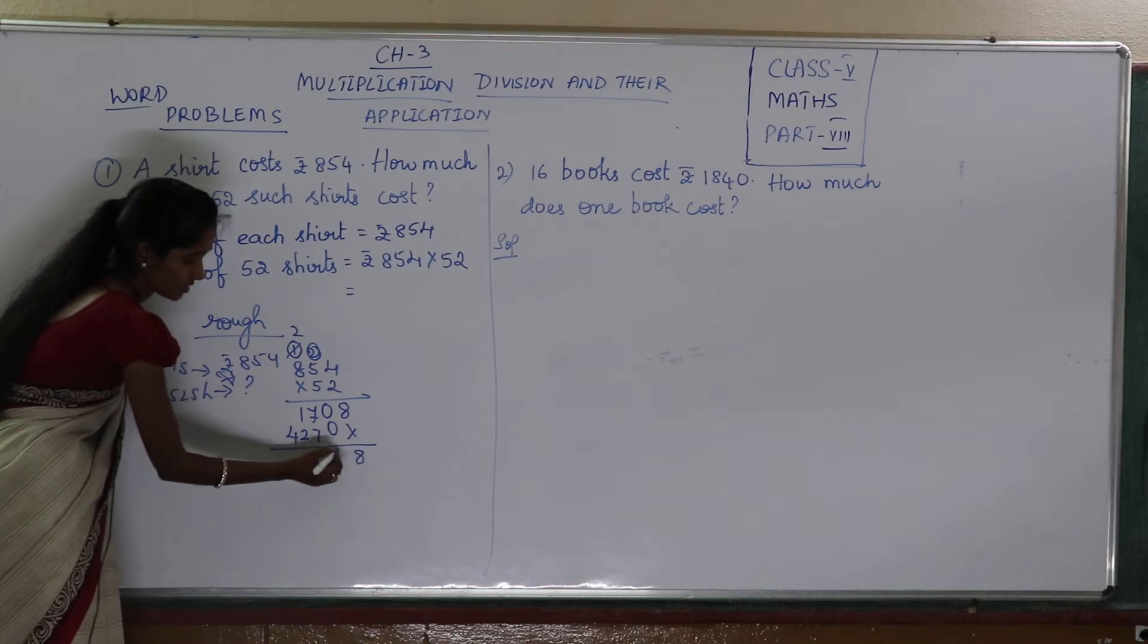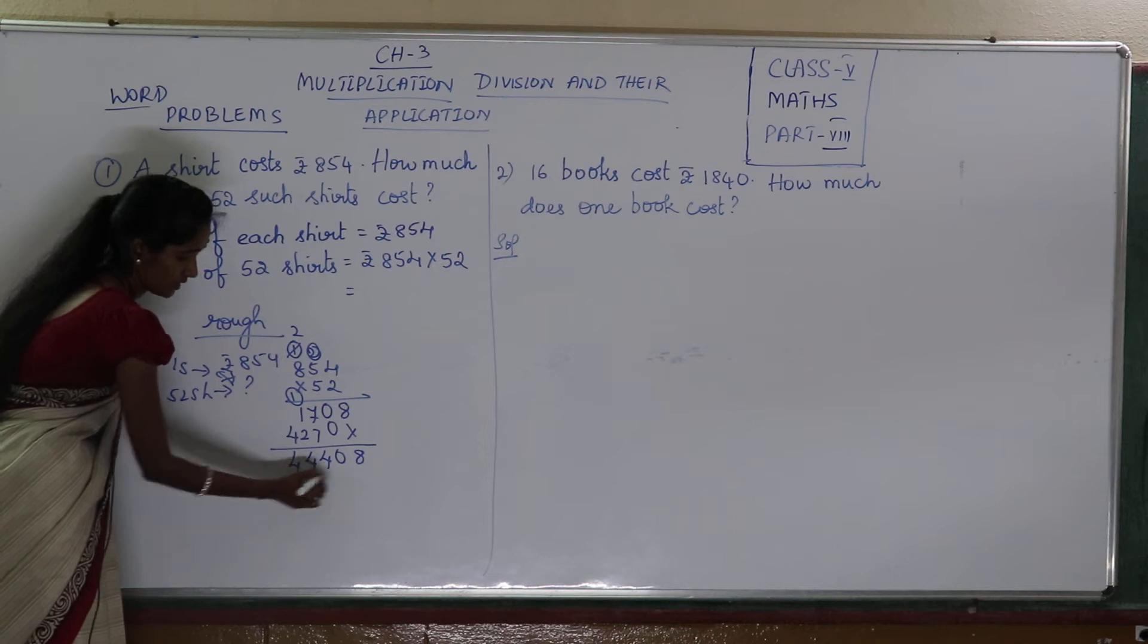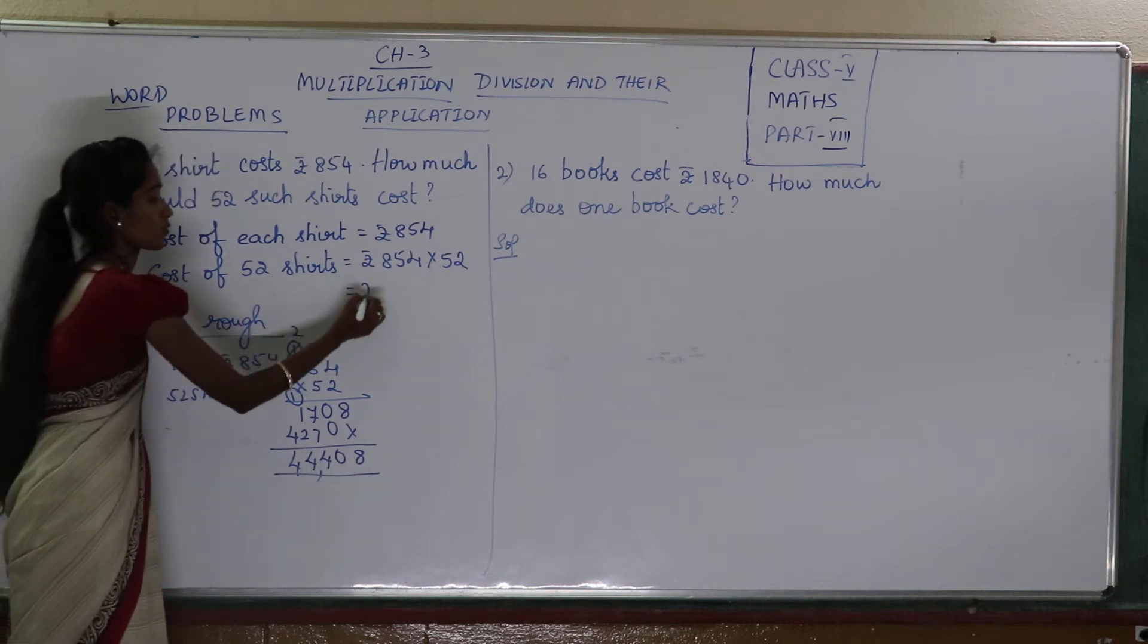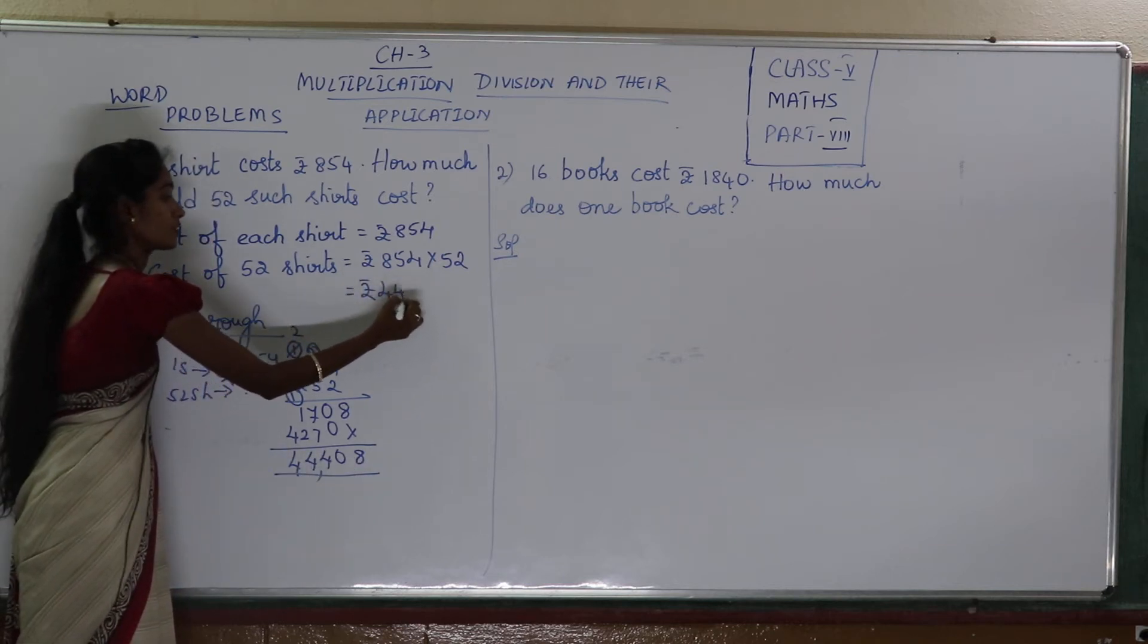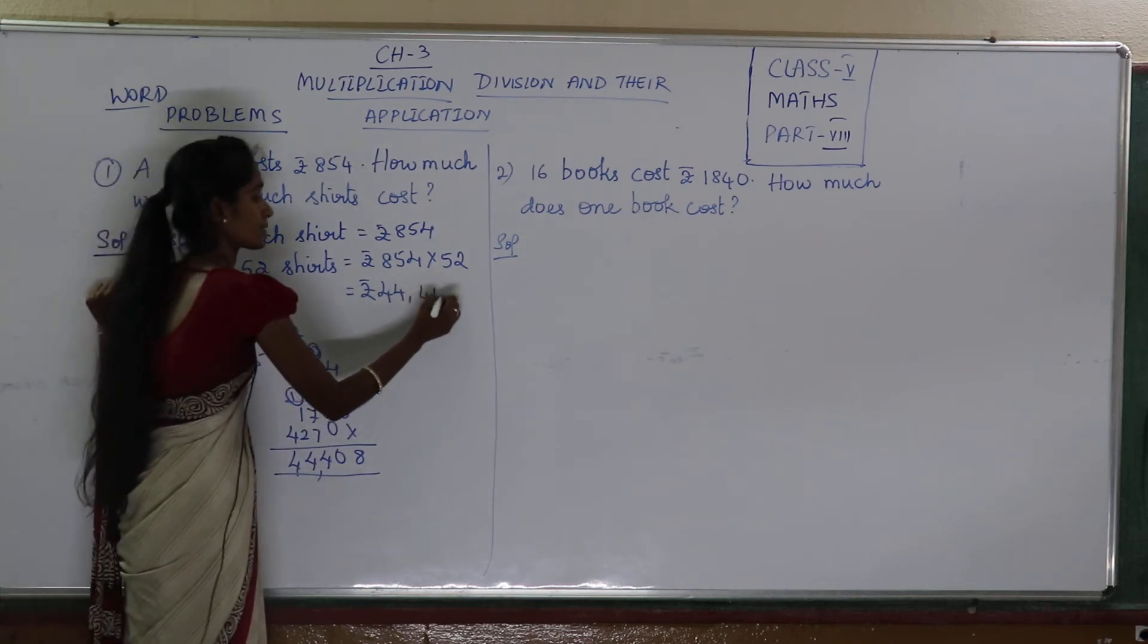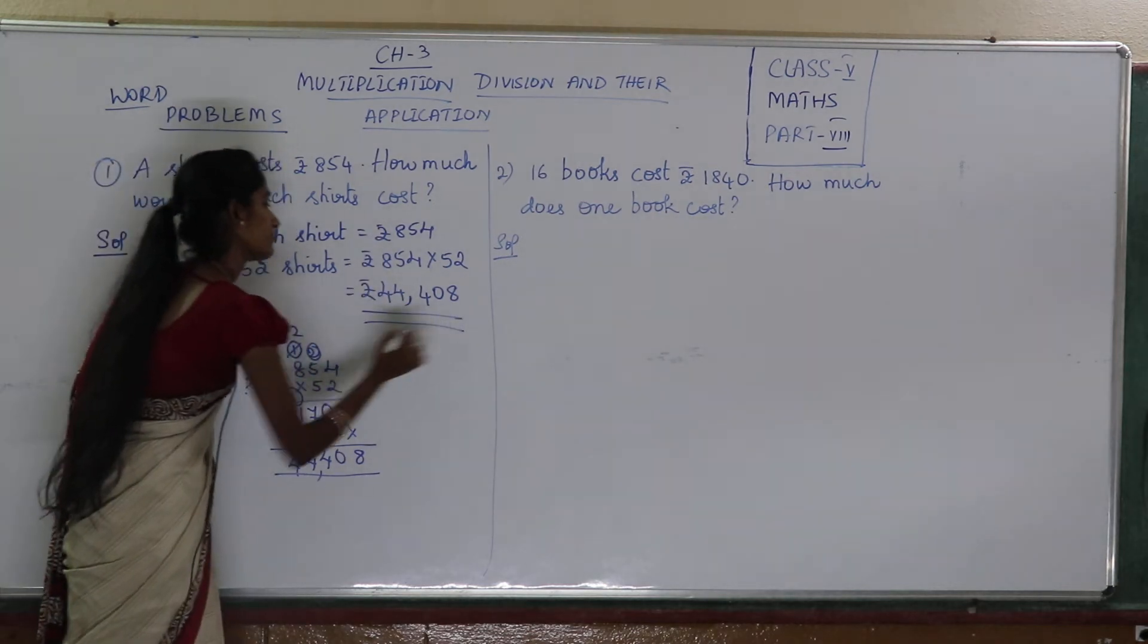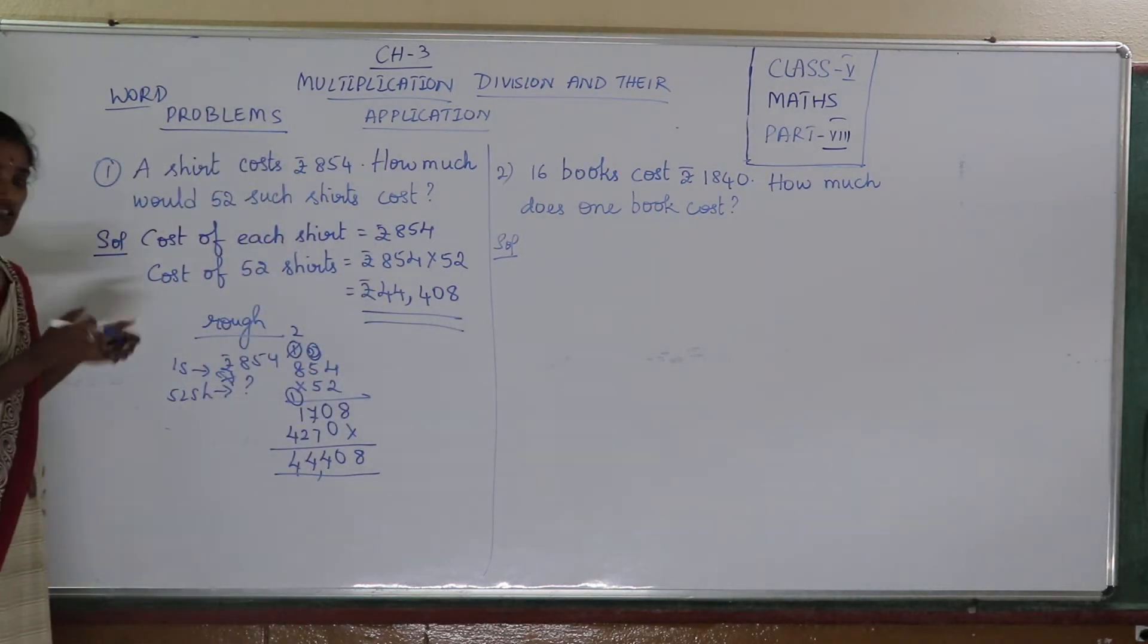Now adding them up, we get 44,408. So what is the cost of all 52 shirts? 44,408. So this is how we find out the cost of all the shirts.